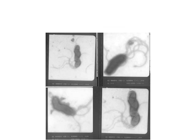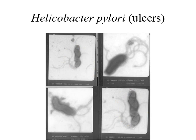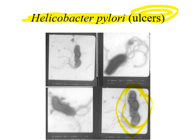If you guessed spirilla for the next image, you're right. This is Helicobacter pylori, which causes ulcers in the stomach — gastric ulcers. You need to memorize that Helicobacter pylori causes stomach ulcers and that it is a spirillum, not a spirochete. You can see one, two, three bends, and it is quite thick — confirming it is a spirillum.